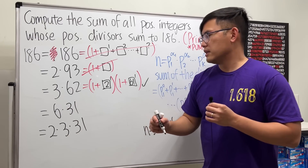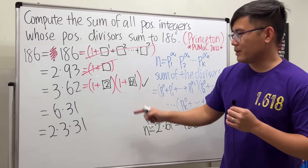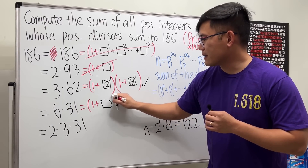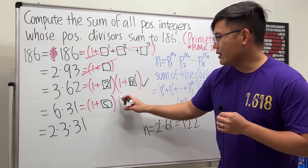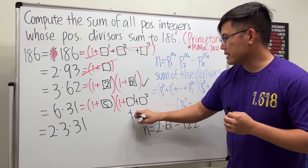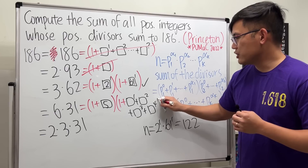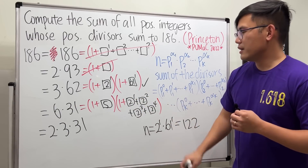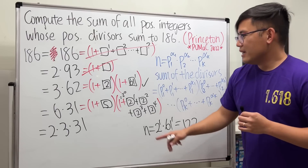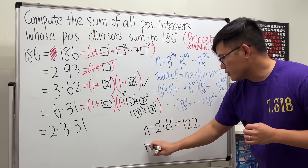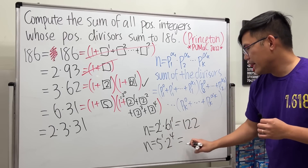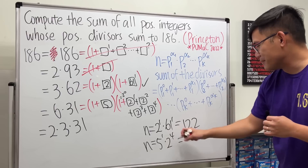For the factoring 6 × 31: the factor 6 gives 1 + 5 = 6, so p = 5 works. For 31, we need 1 + 2 + 4 + 8 + 16 = 31, which is 2⁰ + 2¹ + 2² + 2³ + 2⁴ = 31. So this works: n = 5¹ × 2⁴ = 5 × 16 = 80.